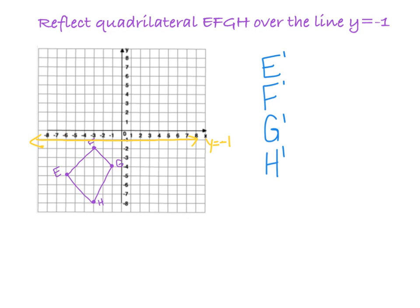So let's start with E. I see that it is 1, 2, 3, 4 points below the line, so now I just simply go 4 points above it. 1, 2, 3, 4, and I put point E prime there. F was 1 below, so now F prime goes 1 above. G was 3 below the line of reflection, so G prime goes 3 above it.